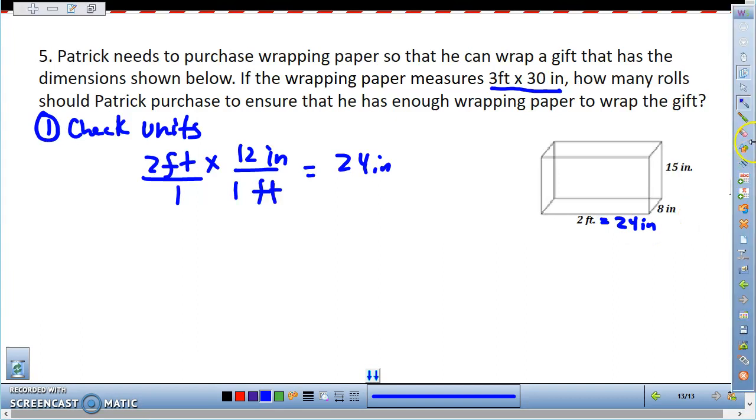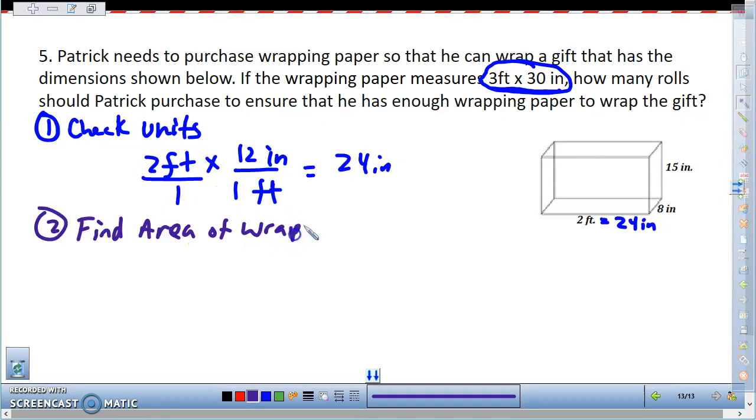Okay, the other thing that you should notice up here is that your wrapping paper is in different units. I have feet and inches. So the second thing I'm going to do is find the area of my wrapping paper, and that is 3 feet by 30 inches.